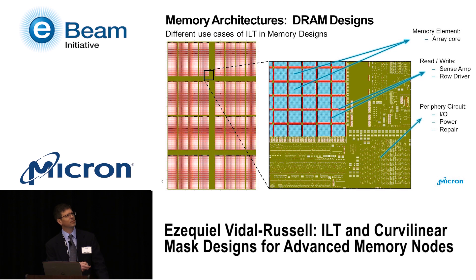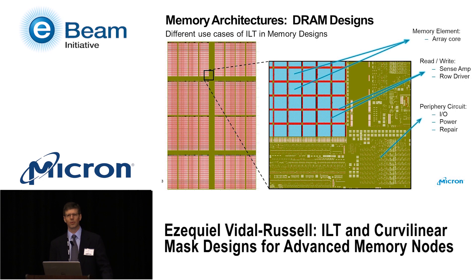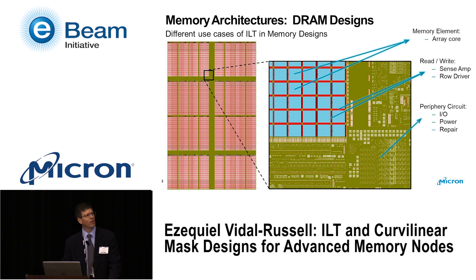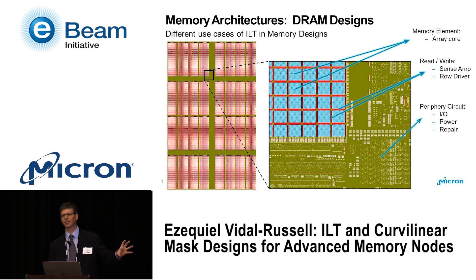Surrounding those memory elements or array cores, you can see a red street, vertical and horizontal — that's where the read and write circuitry lies: the sense amplifiers to read the bits, as well as the row drivers to write those memory elements. The larger brown-colored area is what we call the periphery circuitry, where the IO, power circuits, and repair logic circuits lie. That's also where the pads are for communication to the external world.